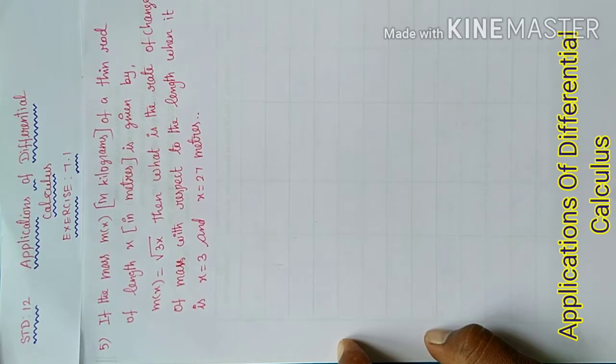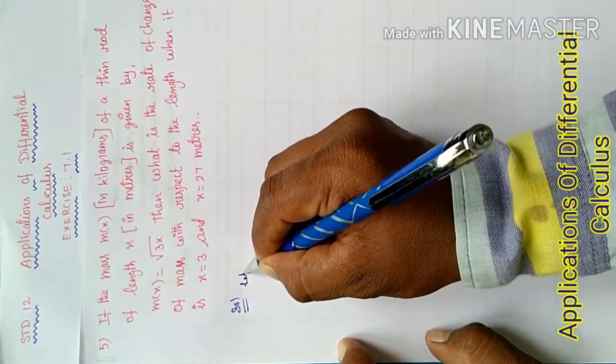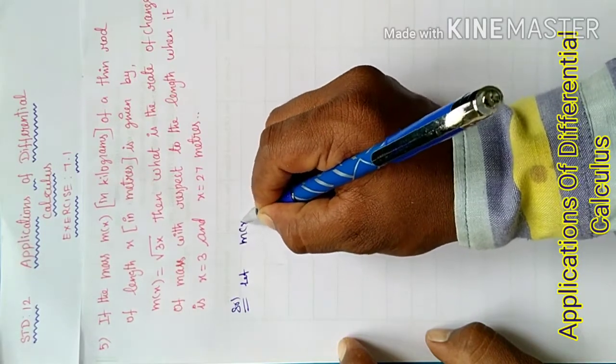3 and x equal to 27? Good information. First one, solutions. Let the mass function m(x) equal to root 3x.